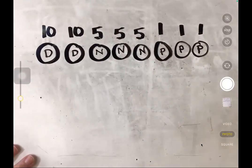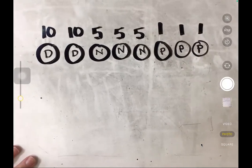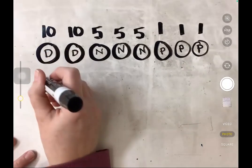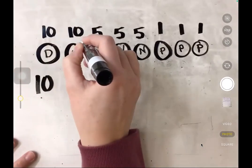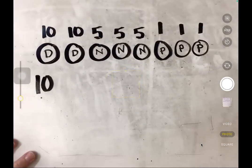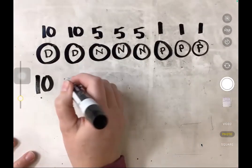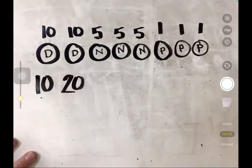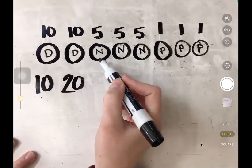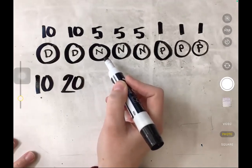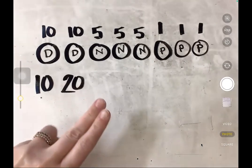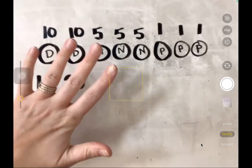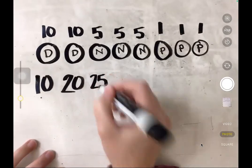So now that I've labeled my coins and I know their value, I can add them up to find the total amount. When I have one dime, I have ten cents. When I have two dimes, I need to add ten more — I know my doubles, ten and ten is twenty. Now when I go to my nickel, I need to add five because that's the value of a nickel. So if I have twenty and I add five more: twenty, twenty-one, twenty-two, twenty-three, twenty-four, twenty-five.